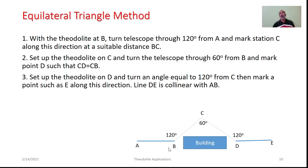In the equilateral triangle method, with the theodolite at B, sight towards A, turn the telescope through 120 degrees, and mark station C at a convenient distance. Occupy station C, take a backsight on B, set an angle of 60 degrees, and fix station D, ensuring BC = CD. Then occupy station D, take a backsight at C, turn the telescope through 120 degrees, and mark station E at the requisite distance. In this way, station E is set in line with AB.